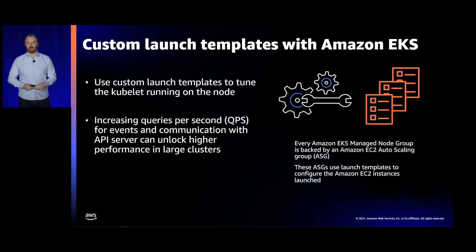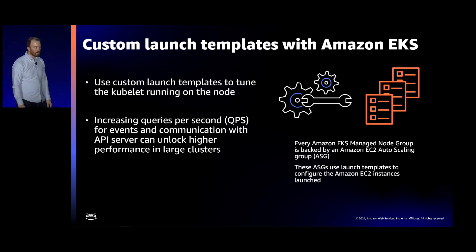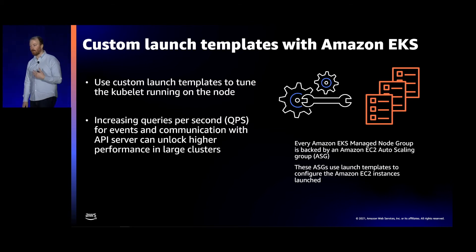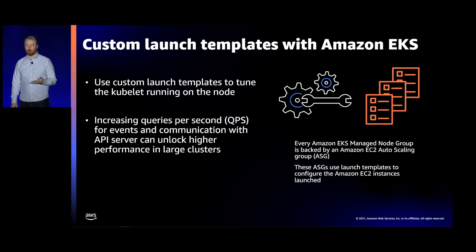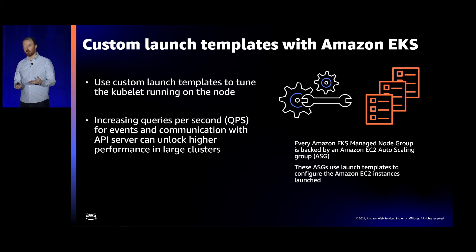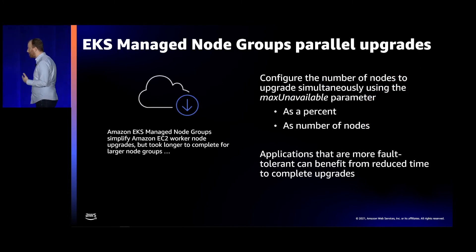First and foremost, custom launch templates with Amazon EKS — launched last year — help support larger and larger clusters. As Shyam was mentioning, one of the things that's really critical is throughput to the API server from the kubelet itself running on the node. By using custom launch templates with Amazon EKS managed node groups, you're able to tune the QPS for the kubelet to unlock the kinds of scale we've been talking about today. This gives you all kinds of options to send configuration parameters to the kubelet to tune it to the right kind of scale for your cluster.